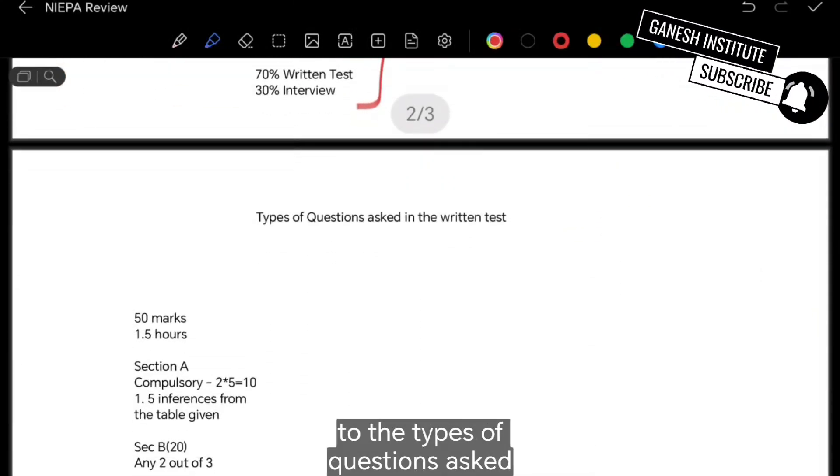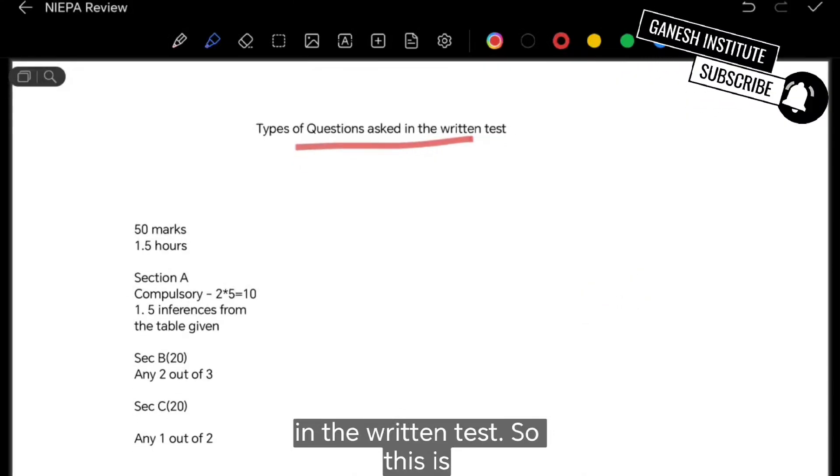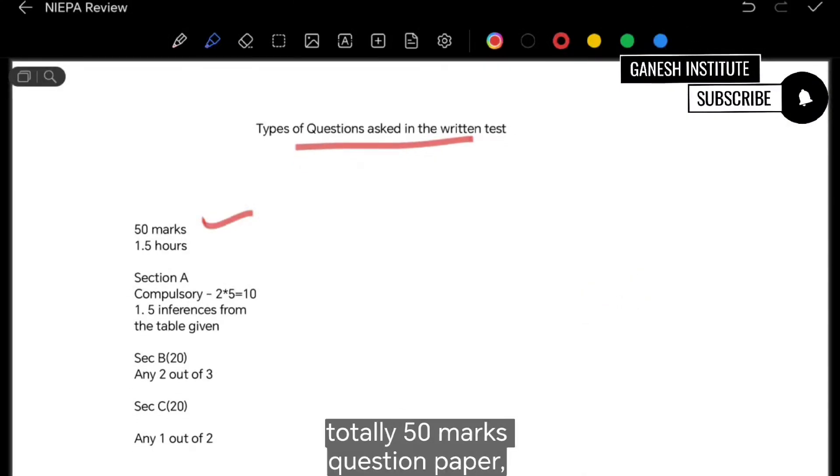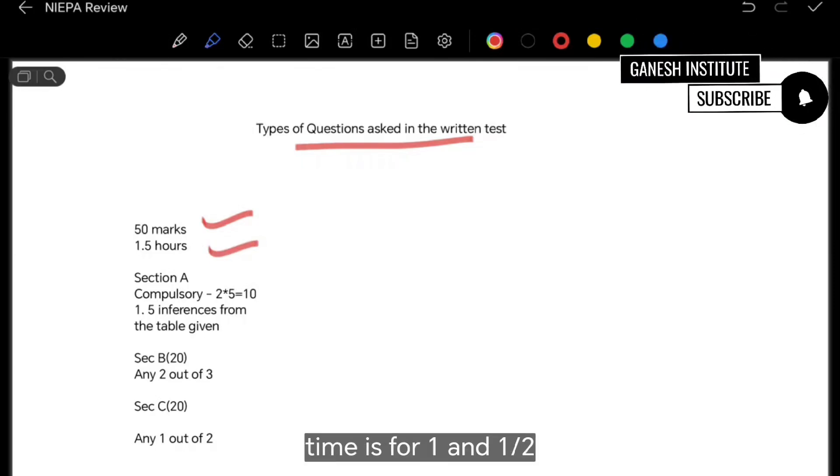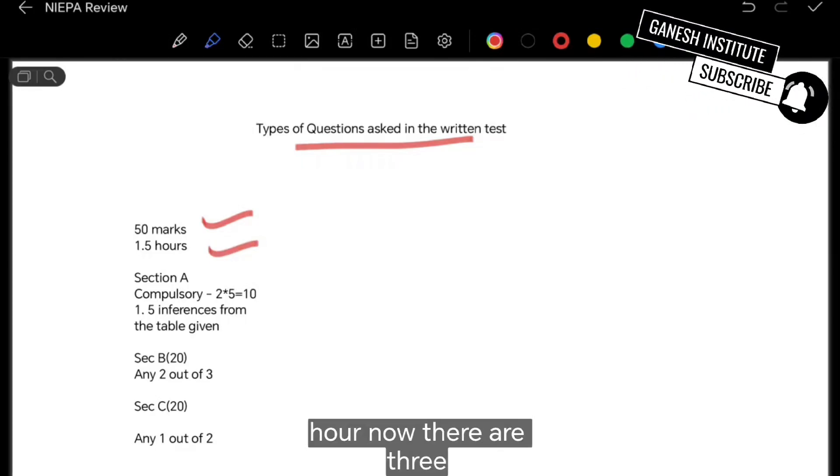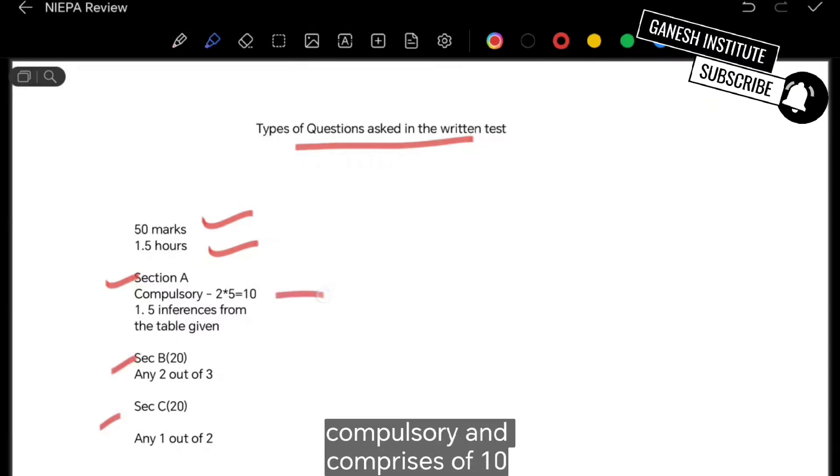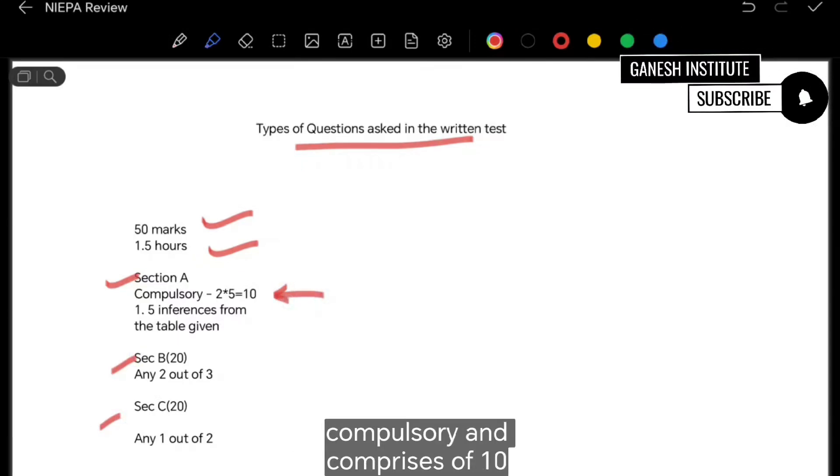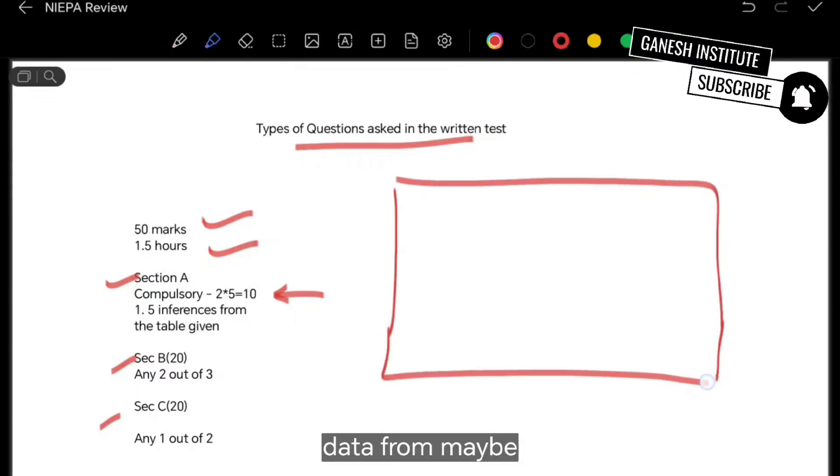Now let's come to the types of questions asked in the written test. So this is totally 50 marks question paper which you'll be given. And the time is for one and a half hours. There are three sections. Section A is compulsory and comprises of 10 marks.